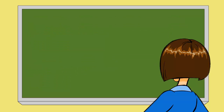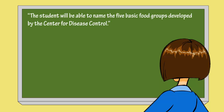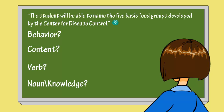Here's an objective that might be used as a basis for some instruction: the student will be able to name the five basic food groups developed by the Center for Disease Control. Sound like a concise and well-written objective? Thinking about what Tyler said, is there a behavior identified in the objective? Is there content identified? And how about Anderson's point — is there a verb that describes the cognitive process and a noun that describes the knowledge the students are expected to acquire?